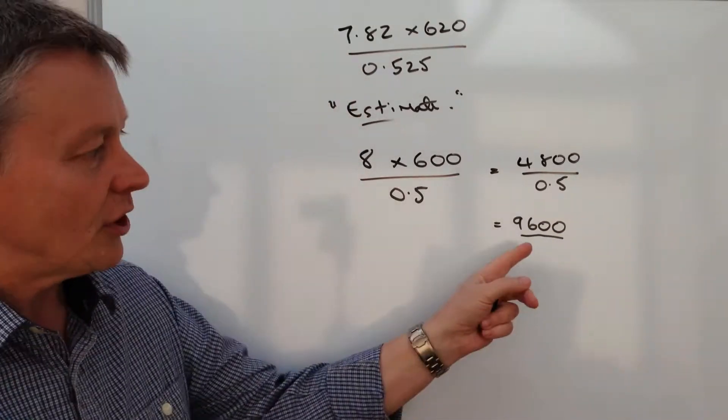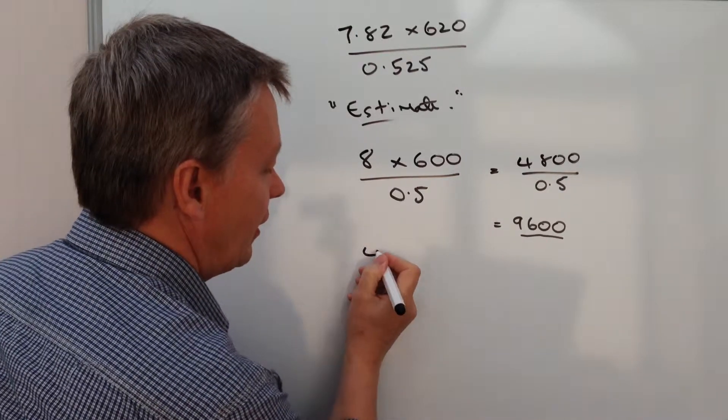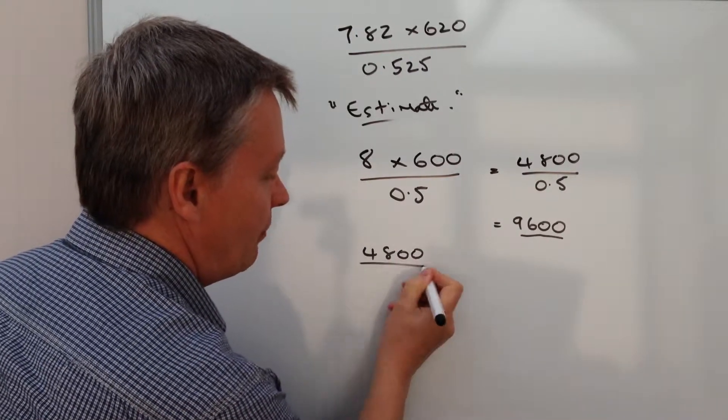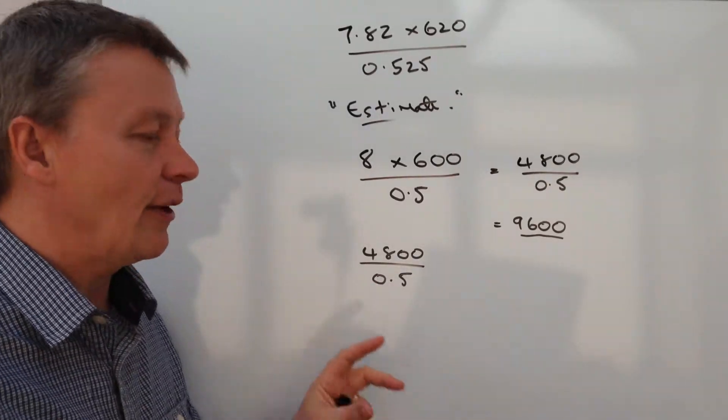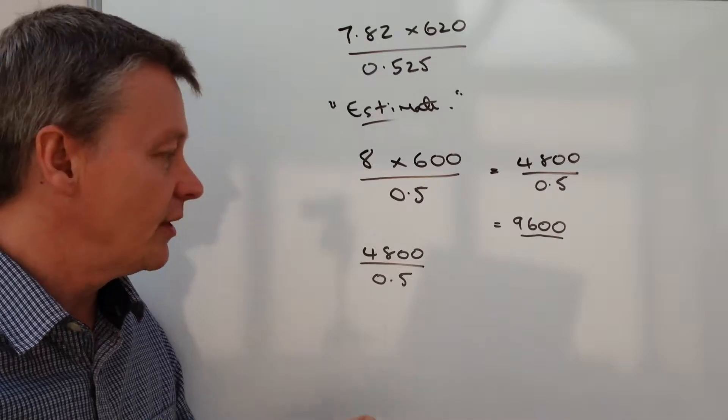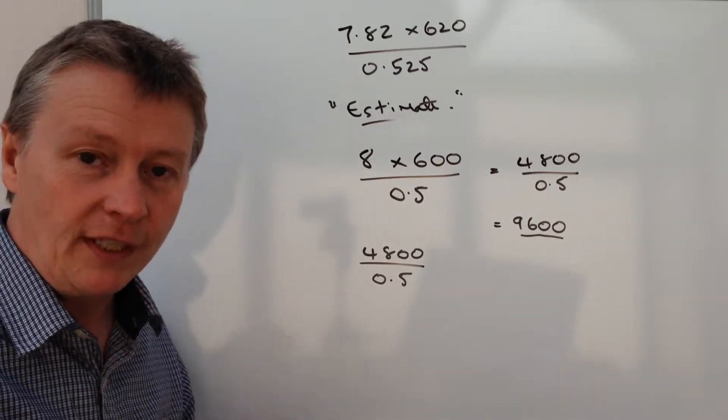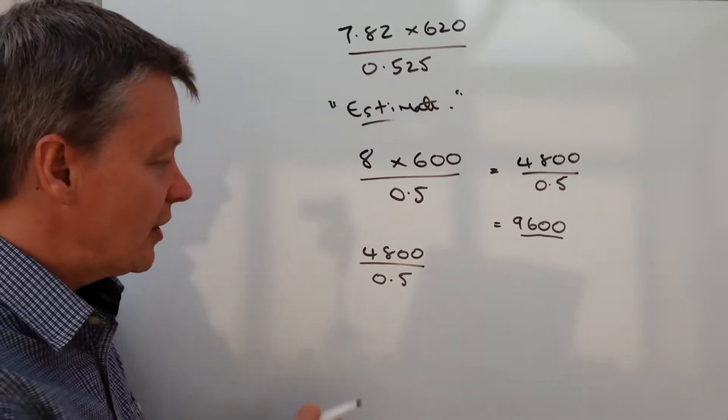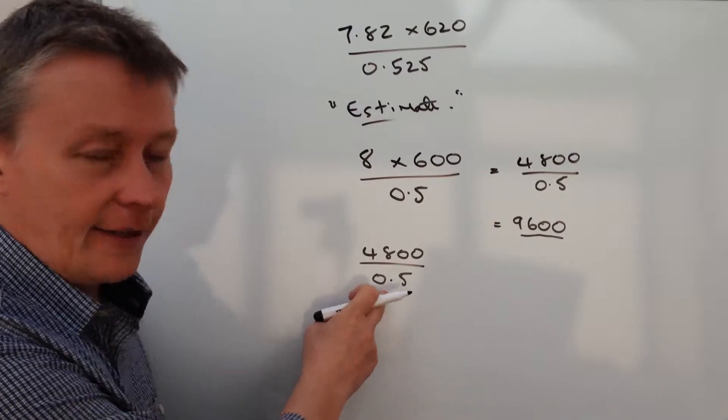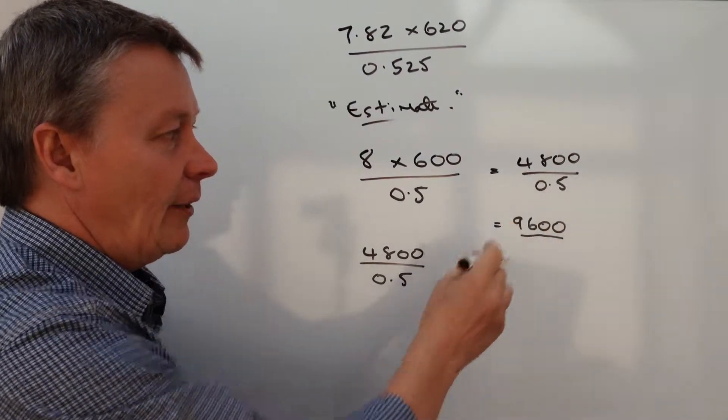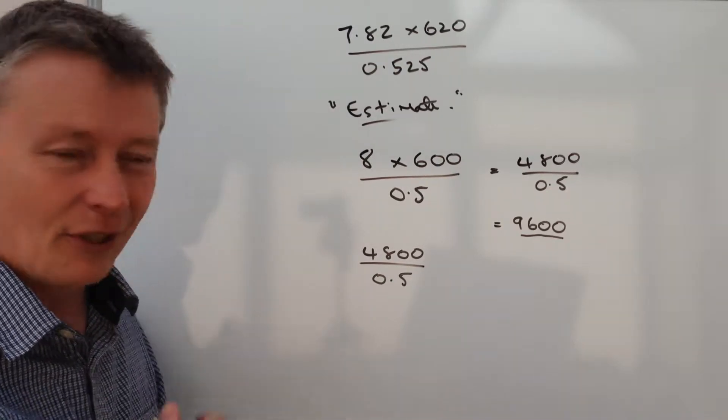Now, if you're not too sure about how to do that calculation, then one of the things you could look at doing is basically manipulating the fraction to suit yourself. One of the great things about fractions is that, providing you do the same thing to the top and the bottom, it means that the fraction hasn't changed. So in this particular case, what I'm finding hard is to divide by 0.5 or find out how many halves there are in 4,800. So I'm not going to do that.